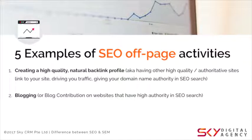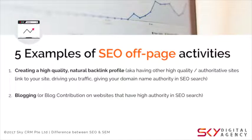Point two: blogging or contributing to other websites. Many people struggle to start blogging, but it genuinely improves your SEO ranking. Aim to write at least one article every two to three weeks, or at minimum once a month. Start with three articles and slowly build your content. Make sure you blog about topics that contain keywords relevant to driving traffic to your site.